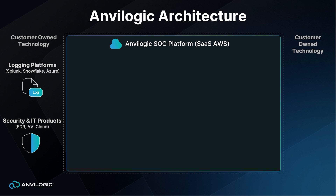Real quick on the architecture — I think this is important as we talk about leaving data where it is. The data is going to be over here in your logging platform that you likely already own and already have some data there. Whether that's Splunk, Snowflake, Azure, or a combination of all of those, what Ambologic is going to do is reach into those data repositories and search.